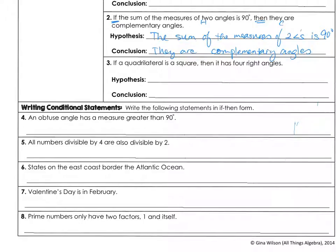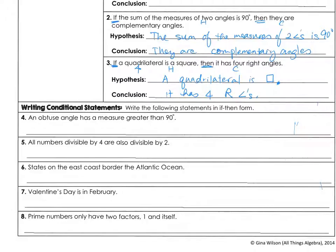Third example: 'If a quadrilateral is a square' — a quadrilateral is basically a shape made of four lines, like a rectangle or a square — 'then it has four right angles.' So I have an 'if' and a 'then.' The hypothesis is 'a quadrilateral is a square,' and the conclusion is 'it has four right angles.'